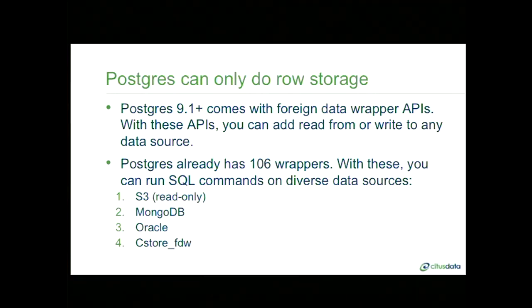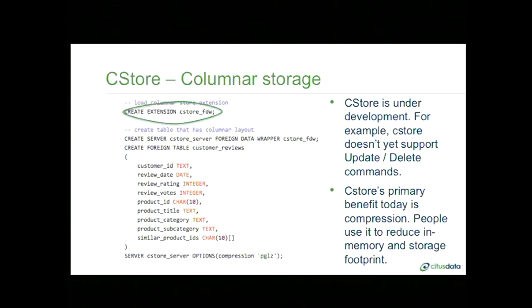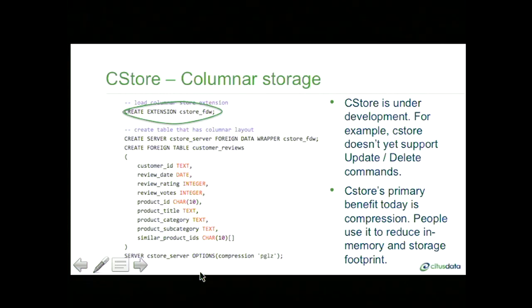I'll talk about C-Store FDW — a columnar extension that stores your data in a columnar format on disk. It's an interesting example of what you can do with Postgres extensions. You create a columnar table in Postgres as if you were creating a regular table — the only difference is you use the FOREIGN TABLE command. Depending on the foreign data wrapper, you can also specify options; here we're saying, for compression, use the PGLZ algorithm.